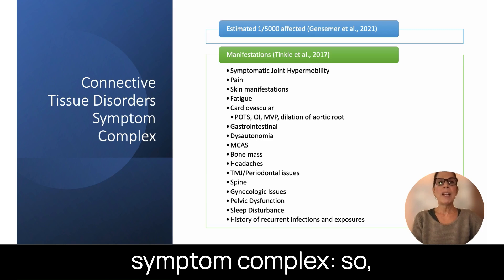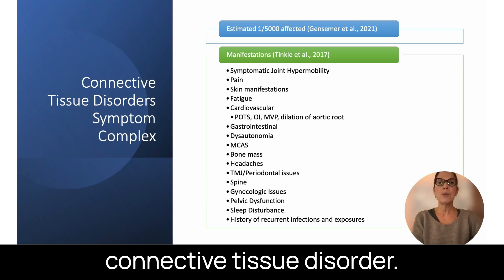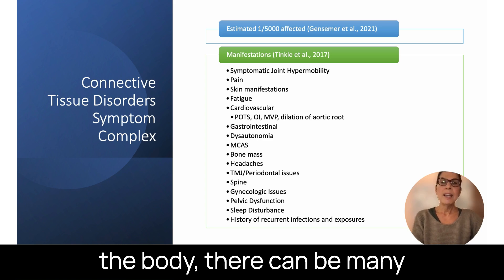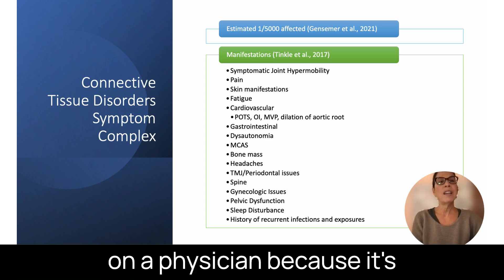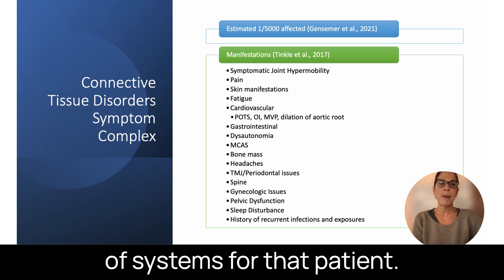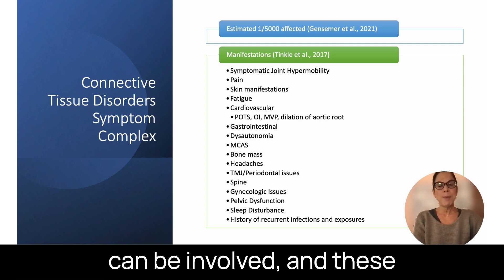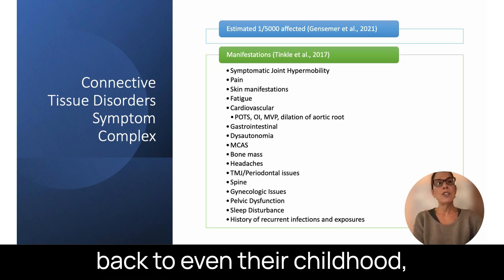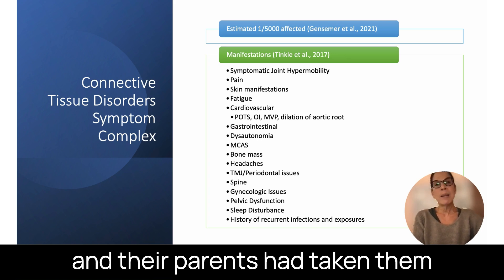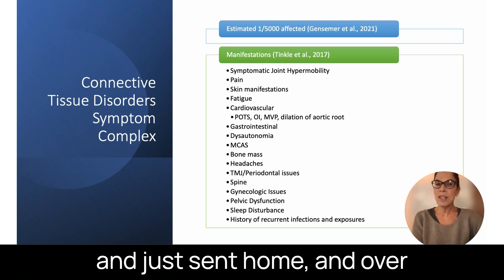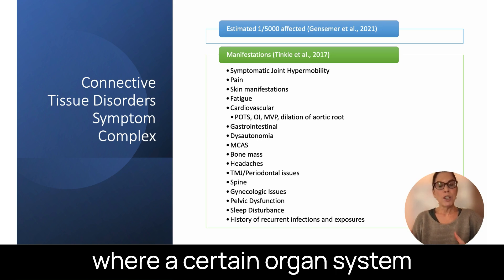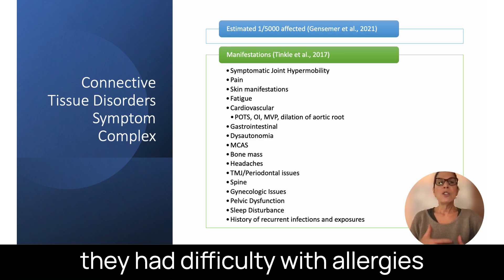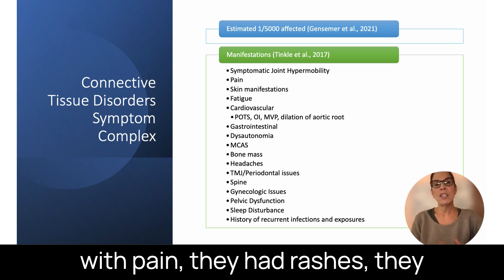It's estimated that 1 in 5,000 are affected by a connective tissue disorder, though that number is likely greater. Because connective tissue is everywhere in the body, there can be many different manifestations — generally a pan-positive review of systems for that patient. These patients can have a wide variety of symptoms that wax and wane over their lifetime. Taking a history back to childhood, you'll find things that were bothersome at the time, and they were just told it was nothing to worry about.